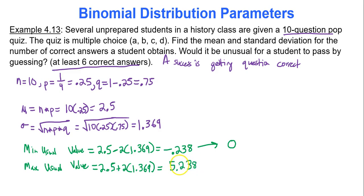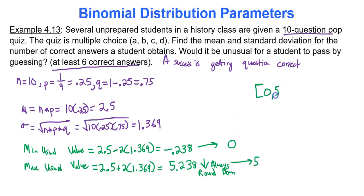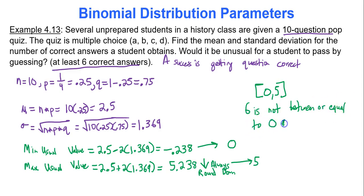Our cutoff is at 5.238. Because we always round the maximum usual value down — always — we get 5. So our spread of usual values is 0 to 5. Six is not between or equal to 0 and 5, which means 6 is not in that interval — 6 is unusual.